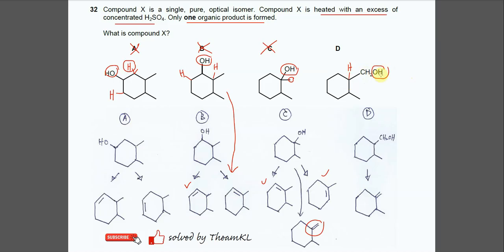So this OH will remove with this H and eventually it will form this double bond. Okay, this one only one alkene formed.